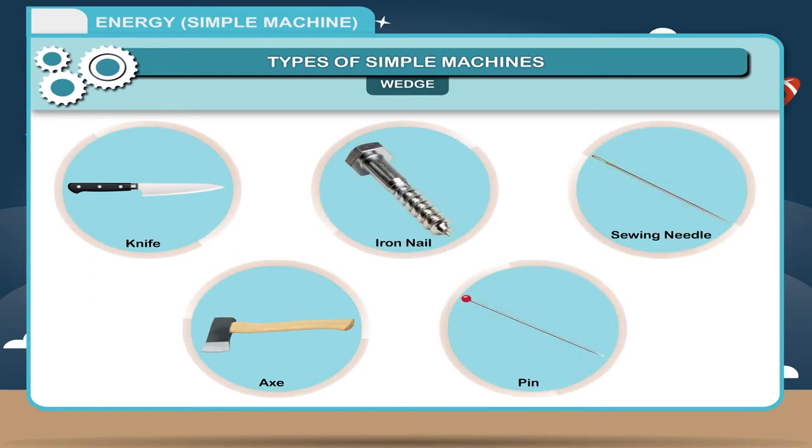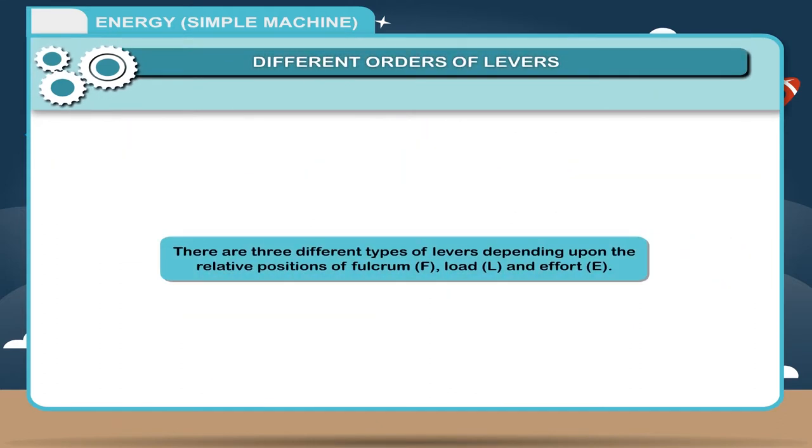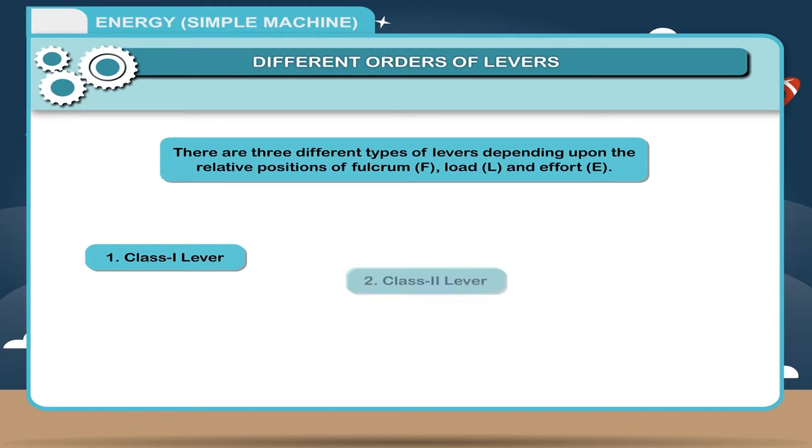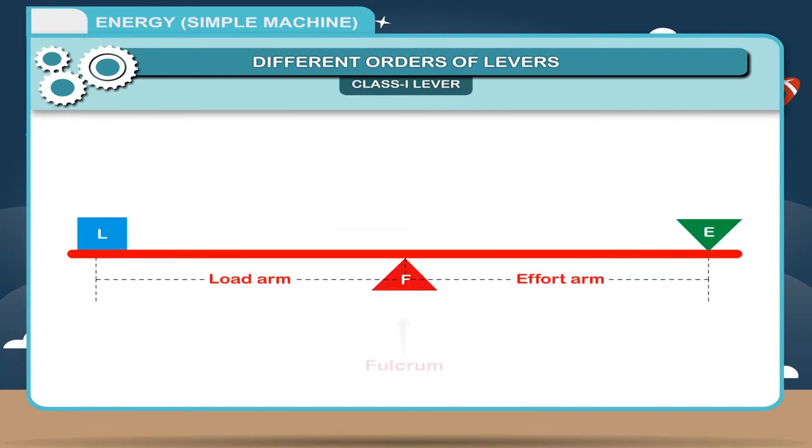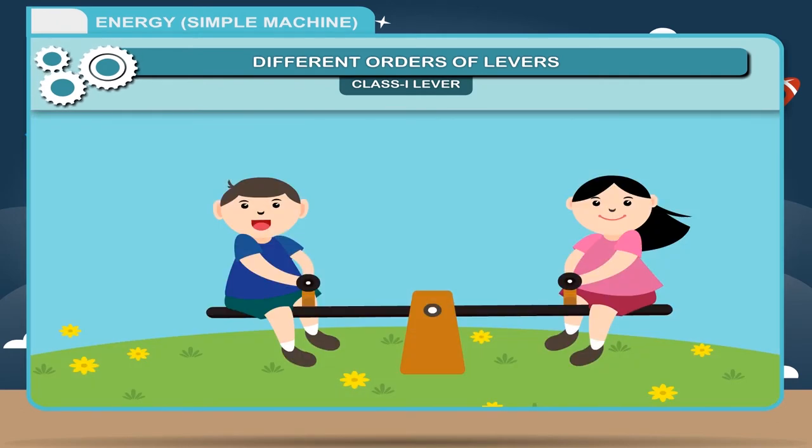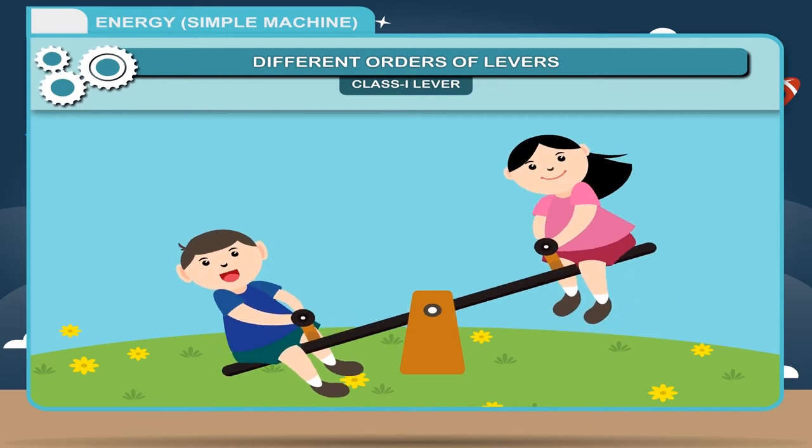Different orders of levers: There are three different types of levers depending upon the relative positions of fulcrum F, load L and effort E. Class 1 lever, Class 2 lever, Class 3 lever. Class 1 lever: In this class of lever, the fulcrum F lies between the load L and the effort E. Examples: A beam balance, a seesaw, a pair of scissors and pliers are the common examples of class 1 lever.